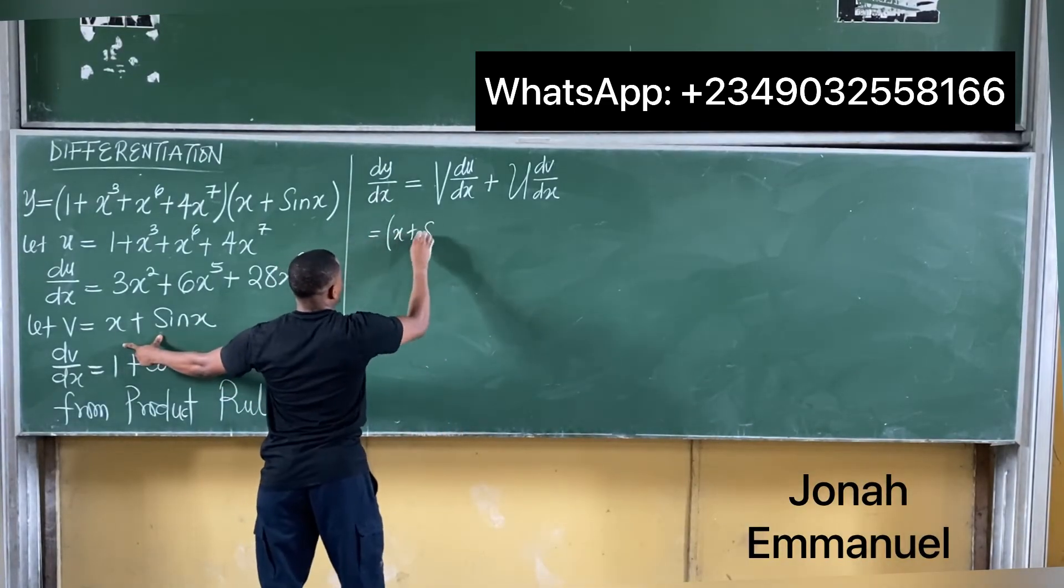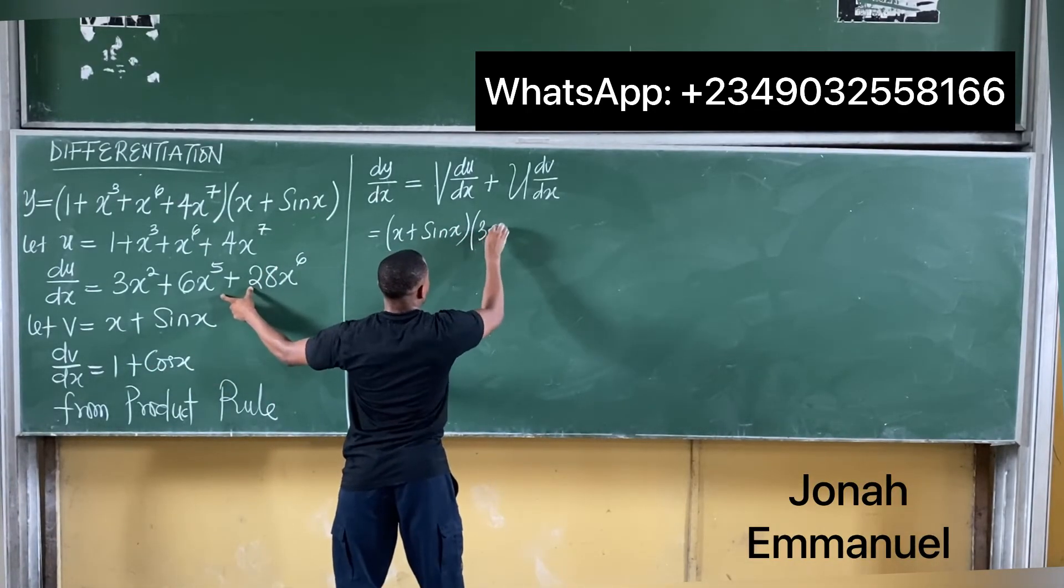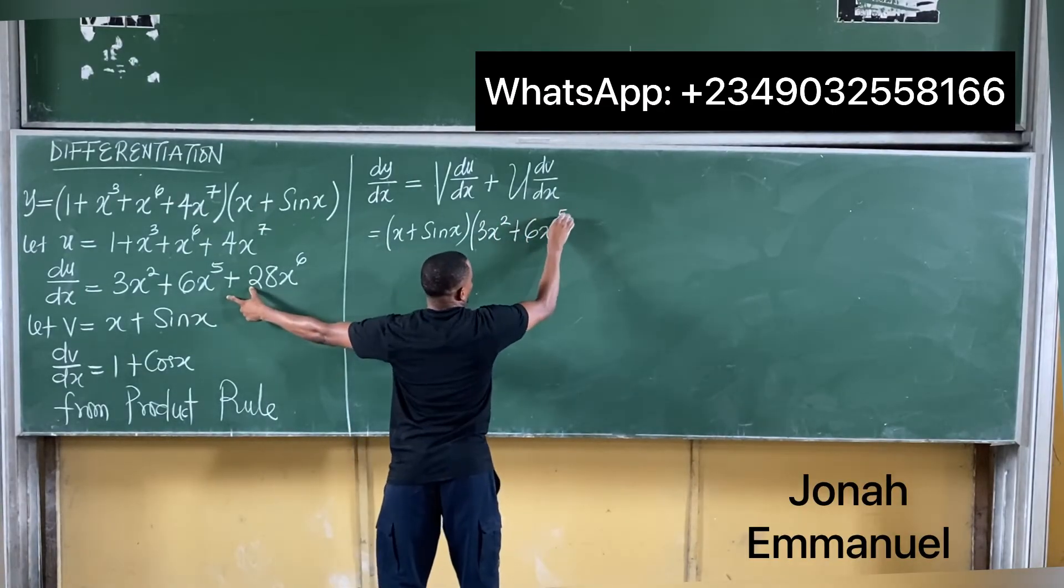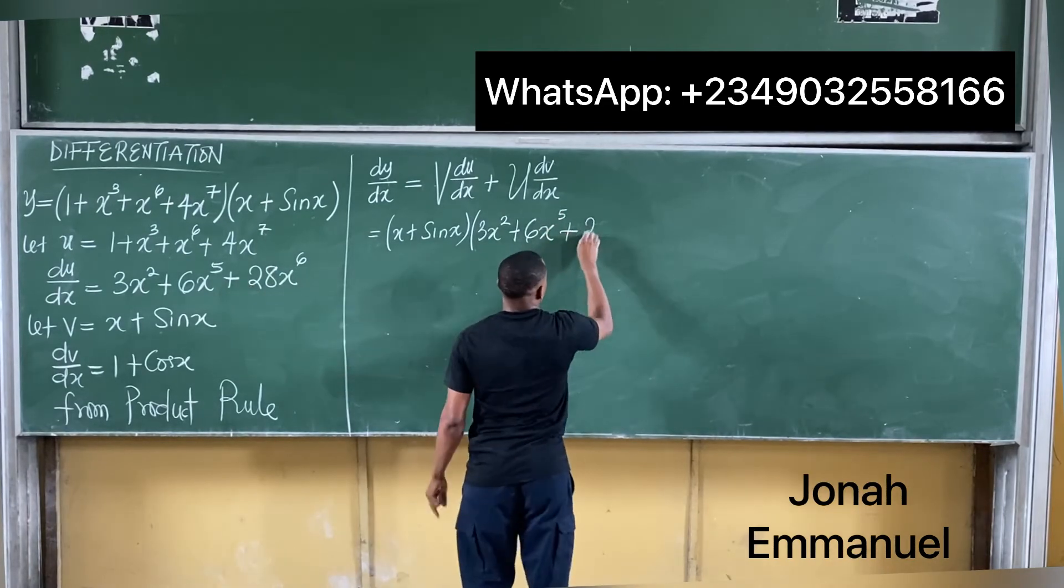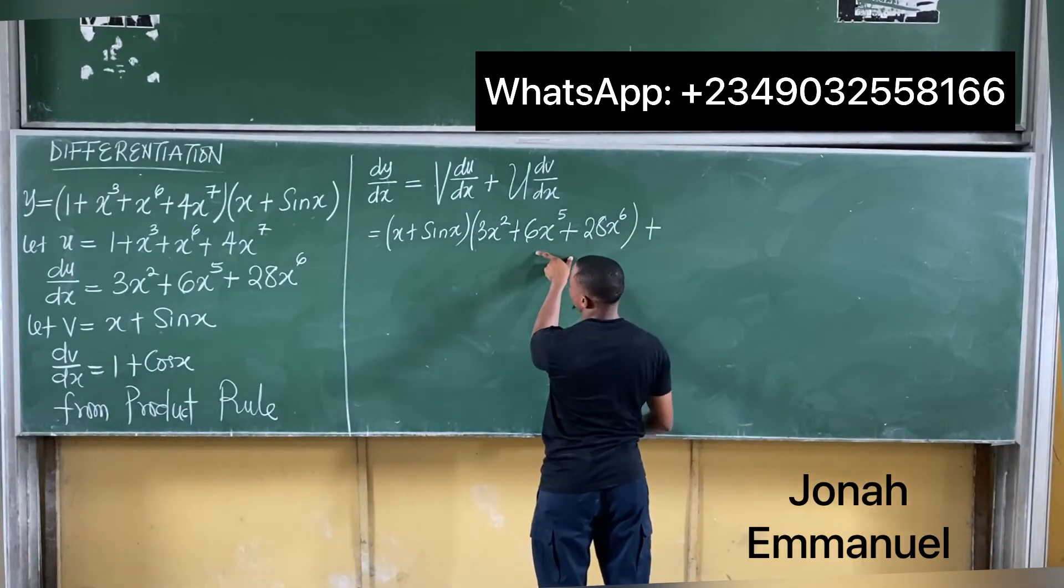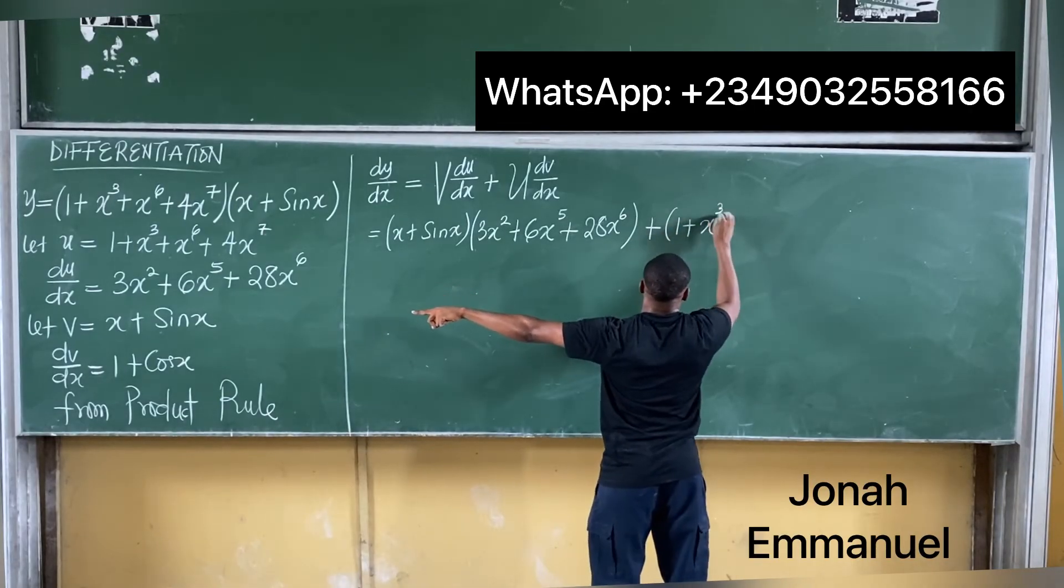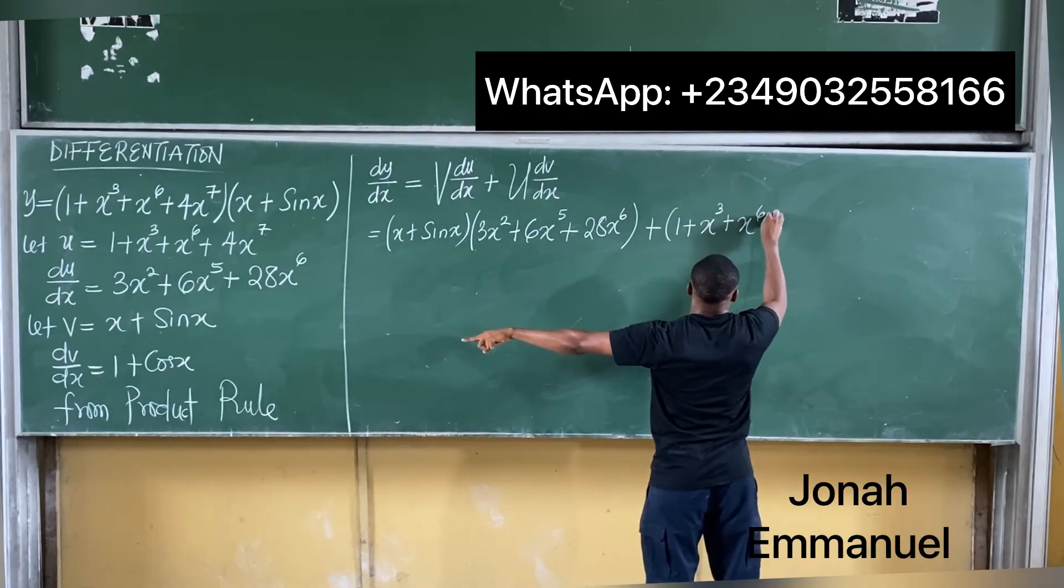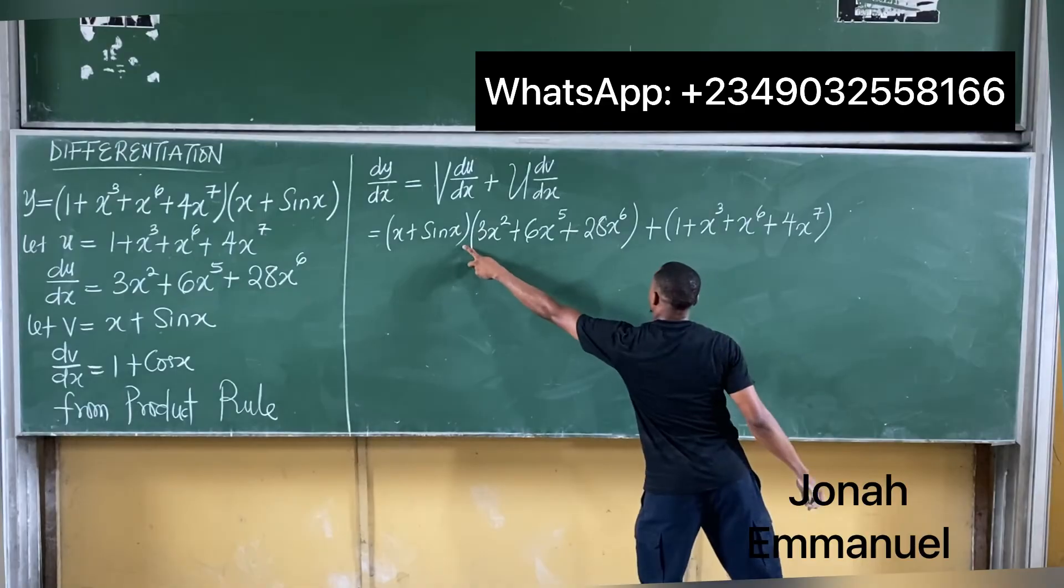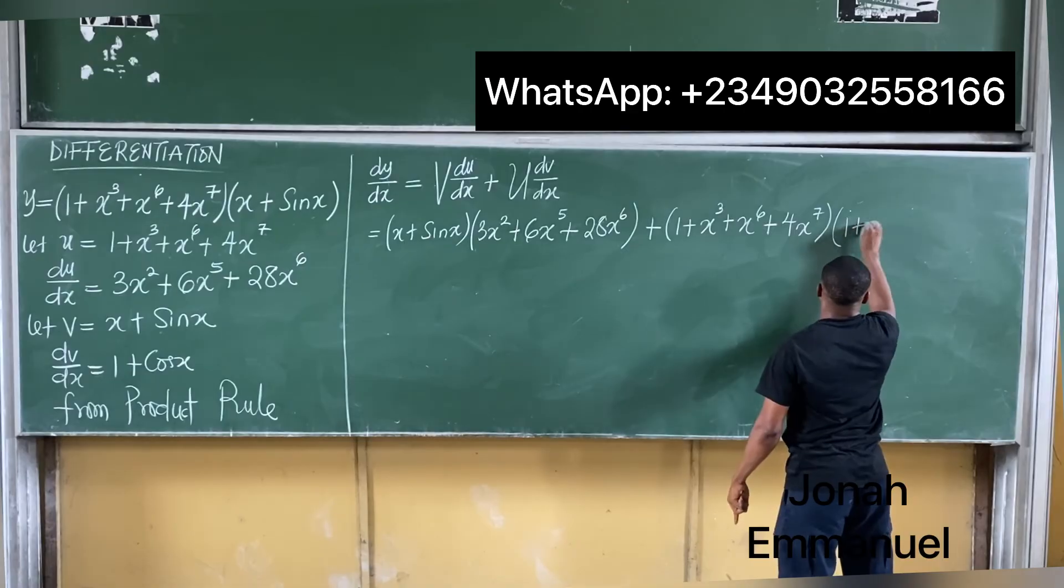v is x + sinx. du/dx is 3x² + 6x⁵ + 28x⁶. So v(du/dx) + u - what's u? 1 + x³ + x⁶ + 4x⁷. So v(du/dx) + u(dv/dx), where dv/dx is 1 + cosx.